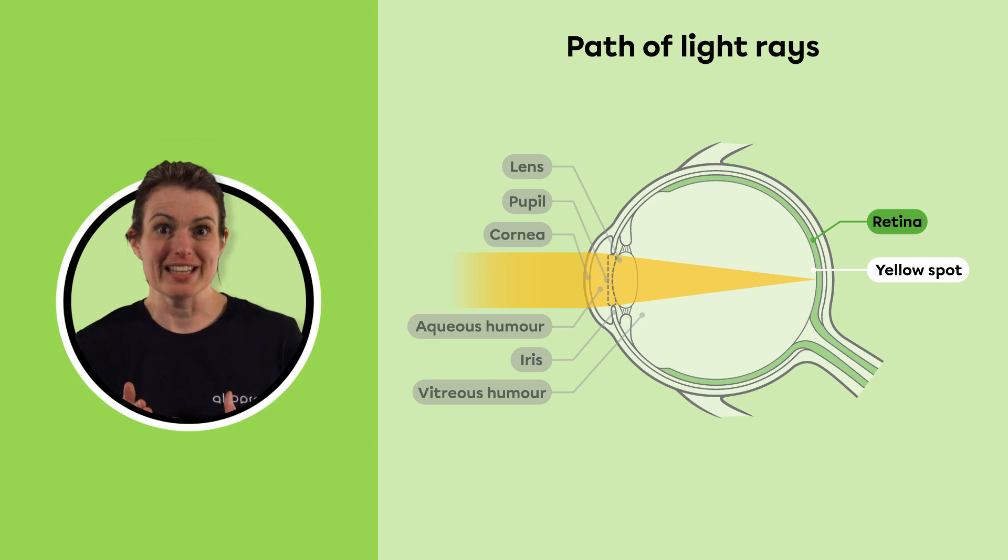The rods, on the other hand, capture the contrast of images, which is especially helpful in poorly lit spaces. The rods are mainly found around the edge of the yellow spot.